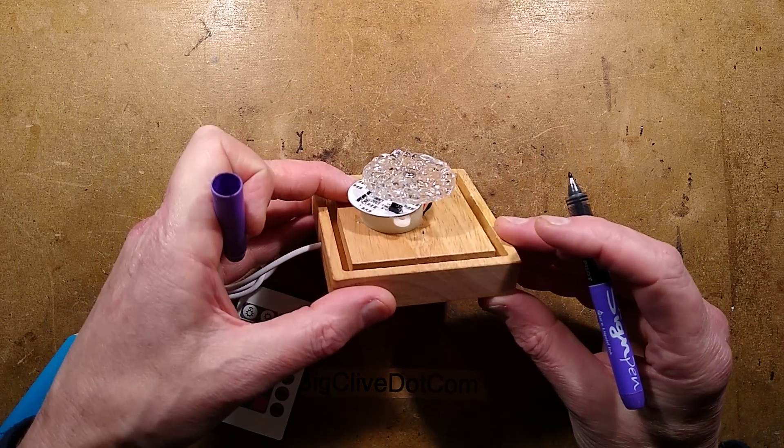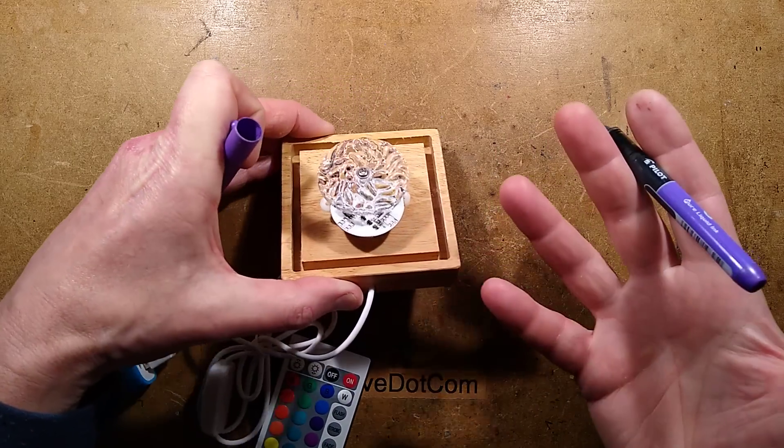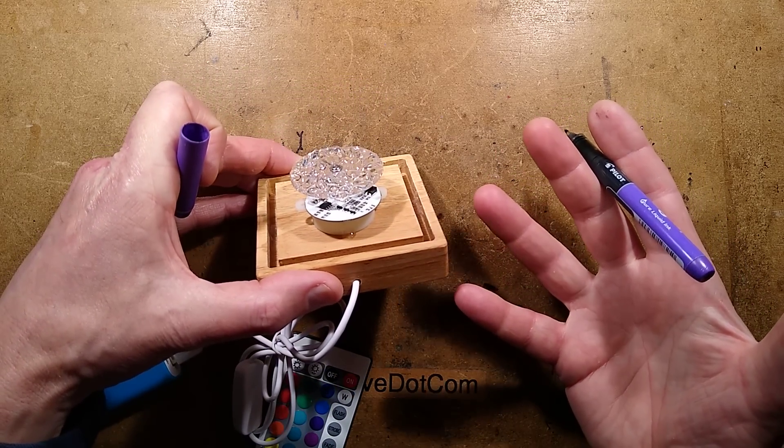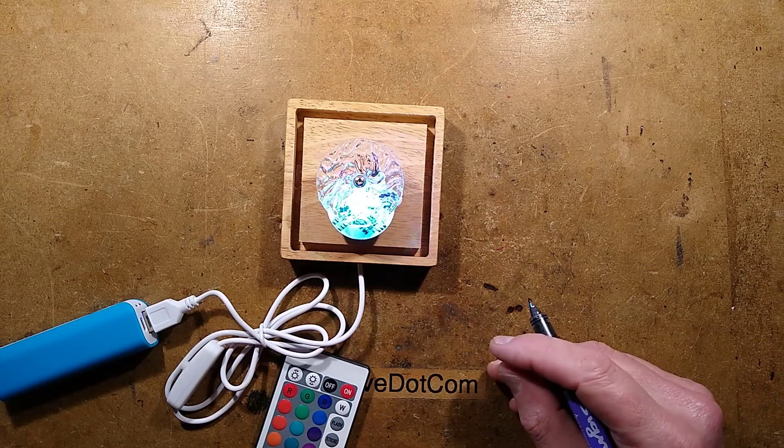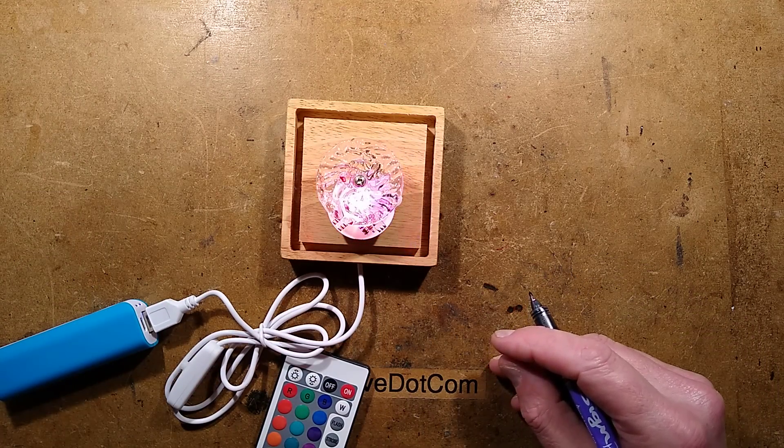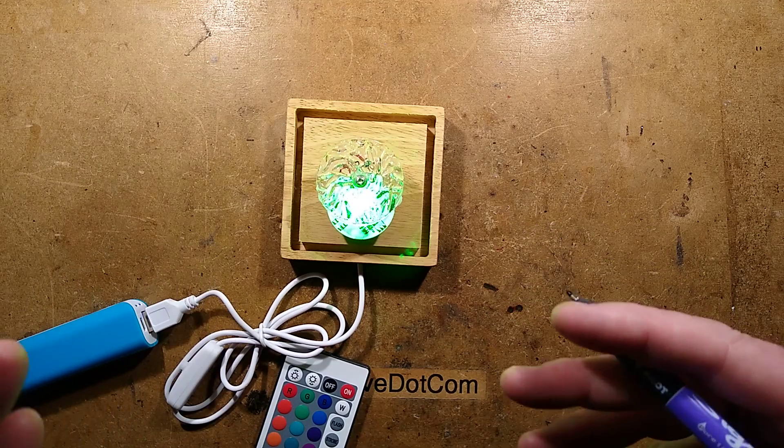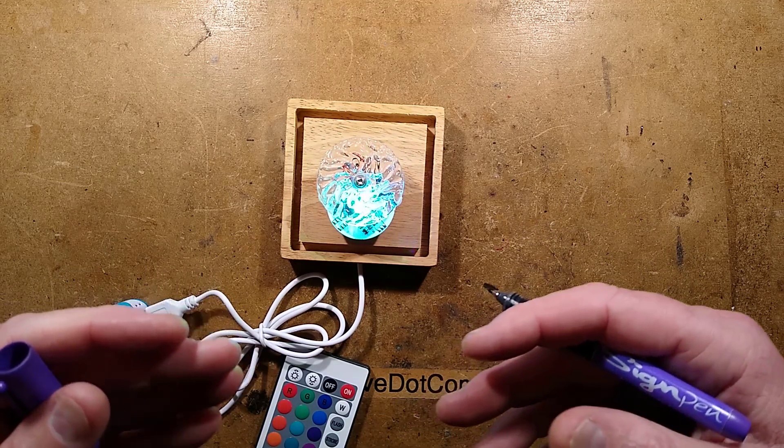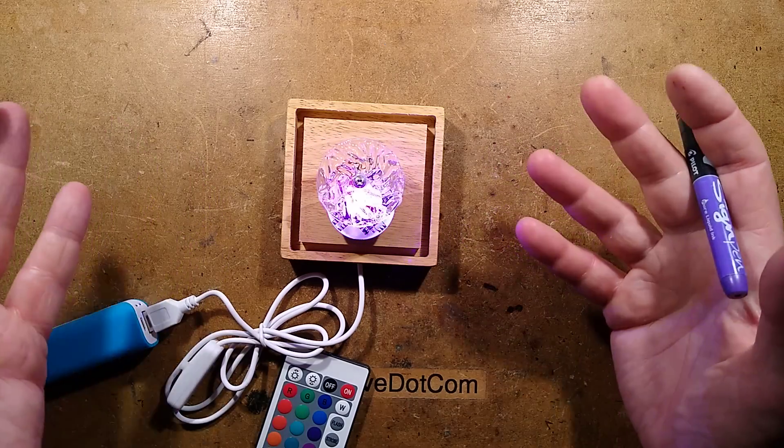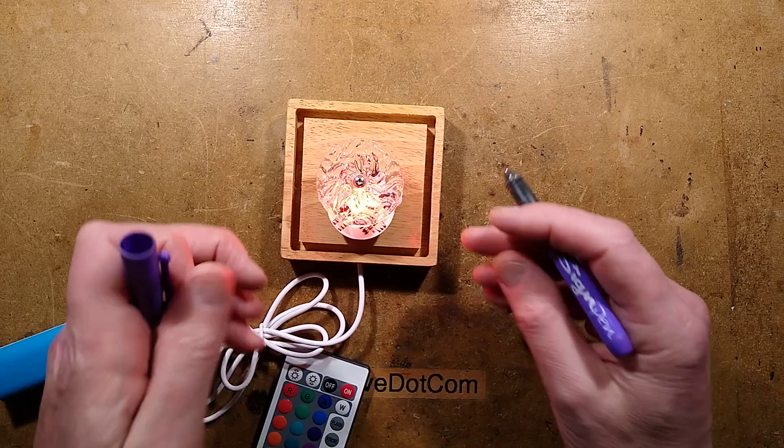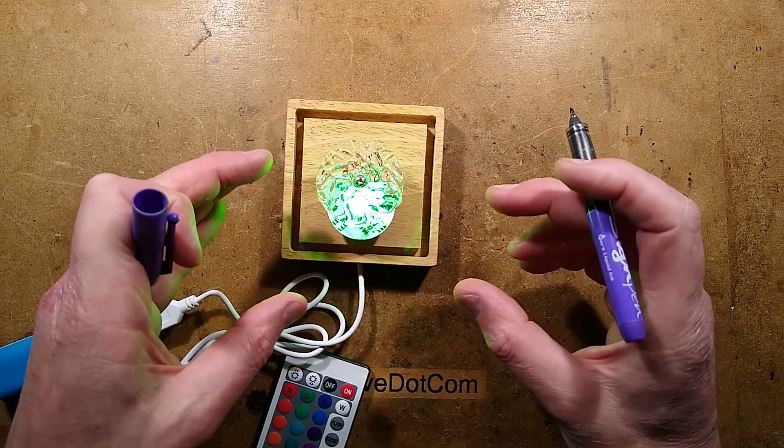So what you could do to modify this, if you so desired, is get rid of the circuit board, put a bit of aluminum in its place, and silicone onto the aluminum a high power LED of your choice in a single color. Because it's quite annoying that every time you turn this on, it starts with its little transition through different colors.